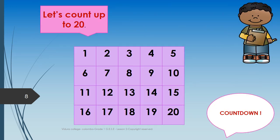Here we are with the number chart. Shall we count up to 20? 1, 2, 3, 4, 5, 6, 7, 8, 9, 10, 11, 12, 13, 14, 15, 16, 17, 18, 19, 20. Very good.